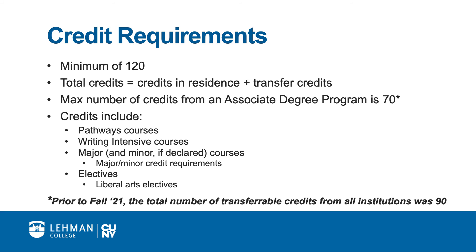If you need general elective credits to reach the minimum of 120 credits required, you can choose from any course in the schedule of classes for which you have met the prerequisites. In some cases, students might be required to complete a specific type of elective known as liberal arts electives. This is to meet New York State's degree requirement for a minimum number of liberal arts credits that make up your bachelor's degree. Your academic advisor will review your record to determine if you are required to take additional liberal arts elective courses to meet this requirement, and provide you with further information if needed.